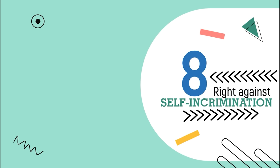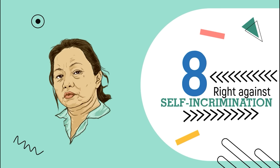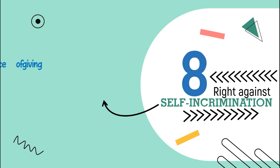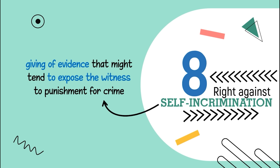Number eight, the right against self-incrimination. You've probably heard Janet Napoles on national TV say, 'I invoke my right against self-incrimination.' Self-incrimination in law is the giving of evidence that might tend to expose the witness to punishment for the crime. Therefore, the right against self-incrimination forbids the government from compelling any person to give testimonial evidence that would likely incriminate him during a criminal case. It covers testimonial compulsion and compulsion to produce real or physical evidence using the body of the accused.